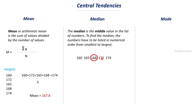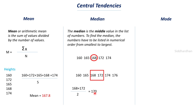When there are an even number of values, say six, you choose the two central values — the third and fourth values. Then find the average of these two values. For example, if the two middle values are 168 and 172, add them and divide by 2 to get 170 — this is the median. The key point is that we must arrange the data in ascending order before finding the median.